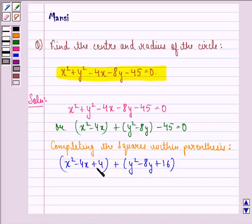Now we add 4 because we know that on adding 4 we will get this as x minus 2 the whole square, and we have added 16 because on adding 16 this becomes y minus 4 the whole square. Since we have added 4 and 16, we need to subtract also. So we will have plus minus 45 minus 4 minus 16 equal to 0.